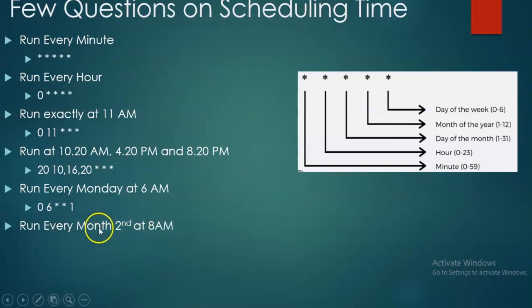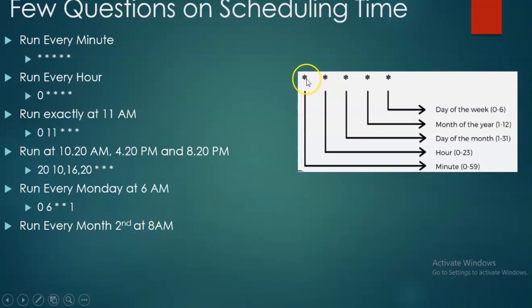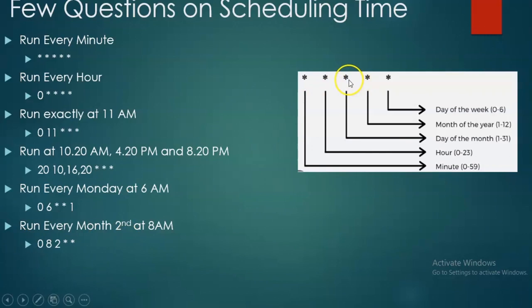Every month on the second at 8 AM. The day-of-month field gets 2. Eight AM means 8 in hours, and exactly at 8 so zero in minutes. The syntax is: 0 8 2 * *